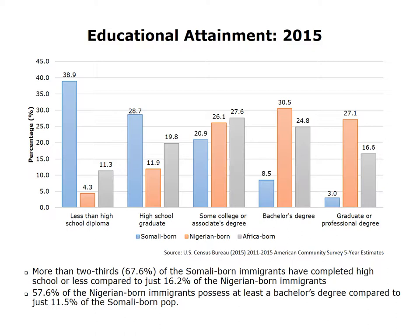As we might expect, Nigerian-born immigrants have higher levels of educational attainment than Somalis. Most Somalis enter the country as refugees, and because of war situations they may not have been able to complete schooling. Nigerians enter as economic migrants and must have high levels of education to navigate the immigration system. More than two-thirds of Somali-born immigrants have completed only high school or less, while 70 percent of Nigerian-born immigrants possess post-secondary educational qualifications.